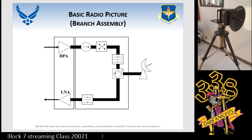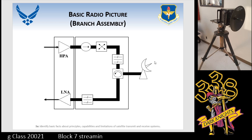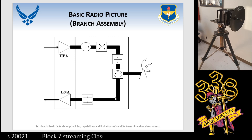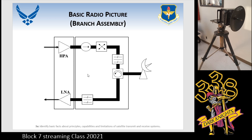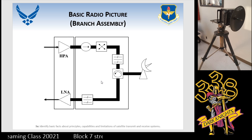We also have something called a branch assembly. This branch assembly has an isolator, a duplexer, a filter, and a circulator that goes out to the antenna. When the signal comes back in the antenna for the receive section, it comes down through the filter and then to the LNA. All of these are considered passive devices — there's no power applied to them. It's just RF going through it.